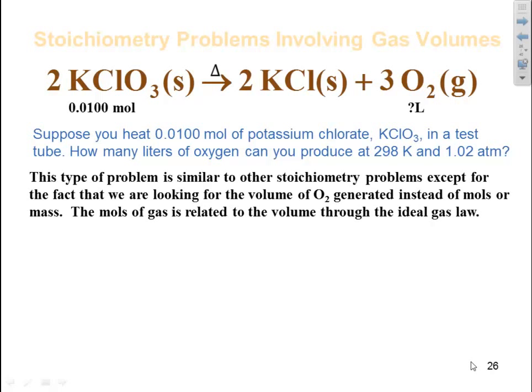This type of problem is similar to other stoichiometry problems except for the fact that we are looking for the volume of oxygen generated instead of moles or mass. The moles of gas is related to the volume through the ideal gas law. So what we're going to have to do is figure out how many moles of my potassium chlorate generates of oxygen gas. Once I know the moles of oxygen gas, I can go and figure out how many liters is associated with that through the ideal gas law.